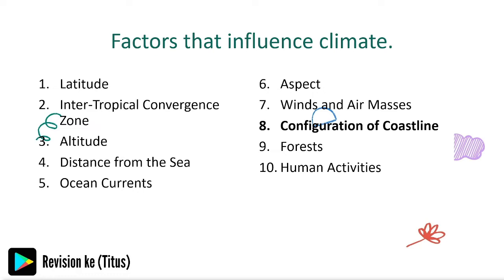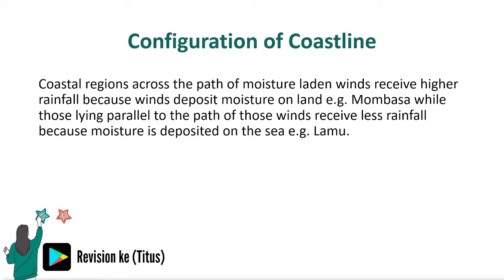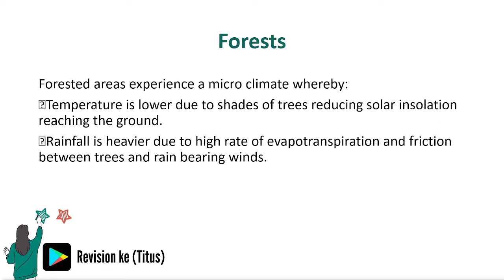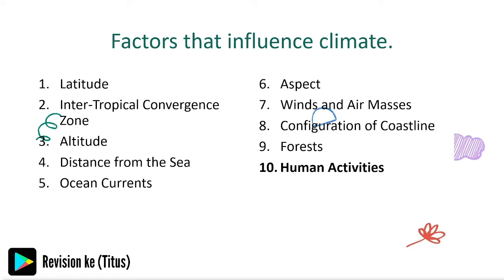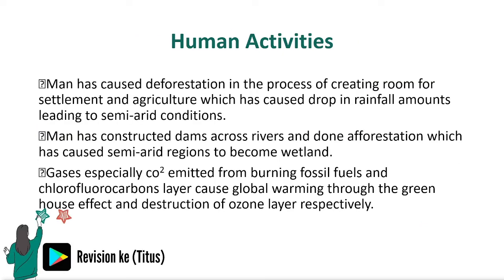Configuration of coastline: coastal regions across the path of moisture-laden winds receive higher rainfall because winds deposit moisture on land. Forested areas experience a microclimate whereby temperature is lower due to the shade of trees reducing solar insolation reaching the ground, and rainfall is higher due to a high rate of evapotranspiration and friction between trees and rain-bearing winds.